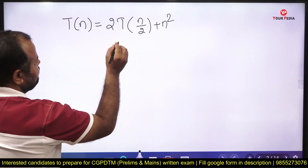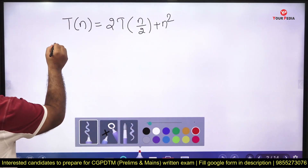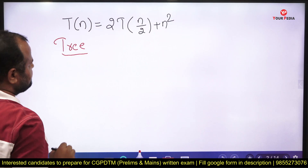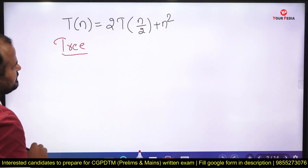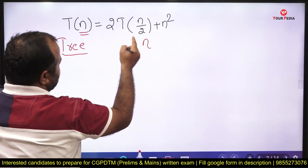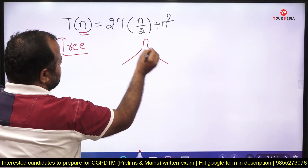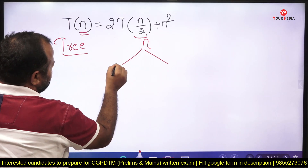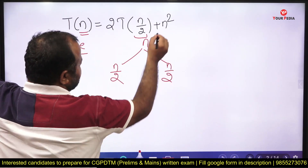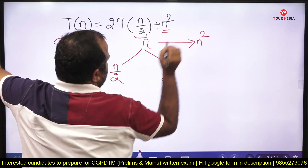We will solve this problem using the tree method. Either we can go for the substitution method or the tree method. Initially the input size is n, it divides the problem into two parts each of size n/2, and the cost to do this task is n².